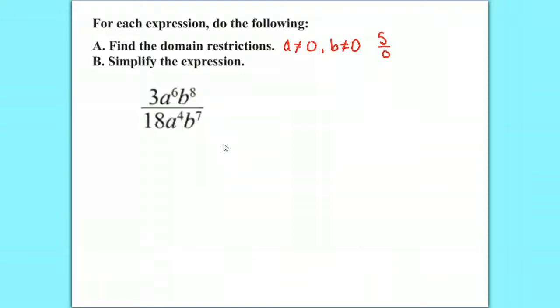So if you look at the 3 and the 18, they both have a factor of 3. 3 goes into 3 one time, and 3 goes into 18 six times.